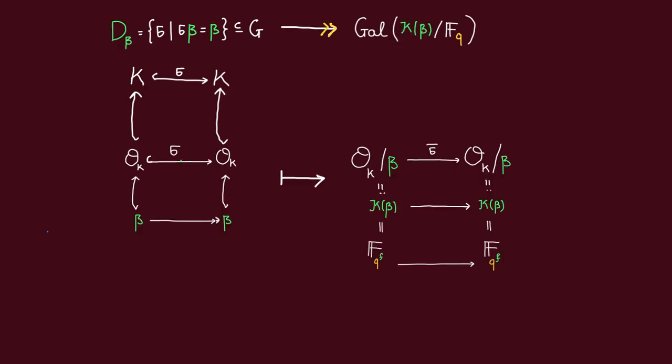Recall that this Galois group, being the Galois group of a finite extension of finite fields, must be cyclic generated by the Frobenius map — that is, the map sending every x in this residue field to x^q. Let us denote that by sigma-bar beta. Since this map is surjective, we should be able to lift this Frobenius map to an element of the Galois group of K over Q, which we will call Frobenius beta. You might object: how do we know that this is well defined? What if there are several different lifts of this Frobenius map? This is exactly why we required q to be unramified in K, because when q is unramified, this map turns out to be an isomorphism, so there is a unique lift of this Frobenius map.